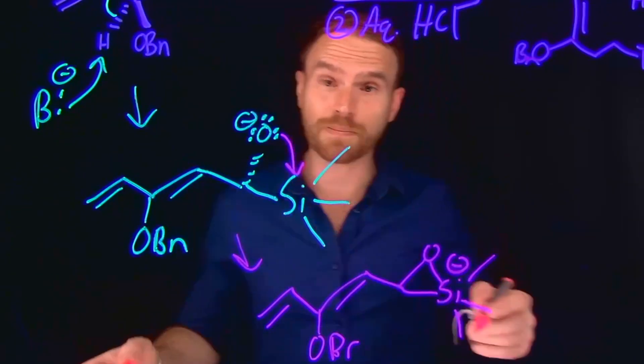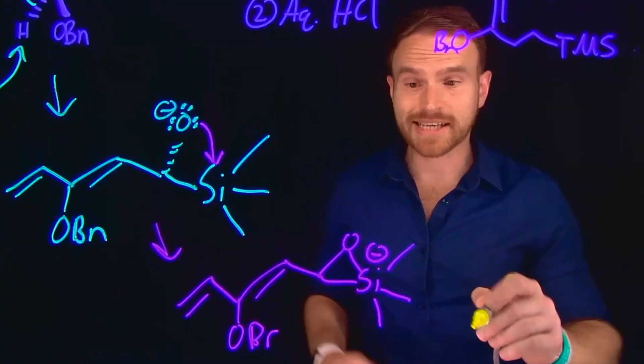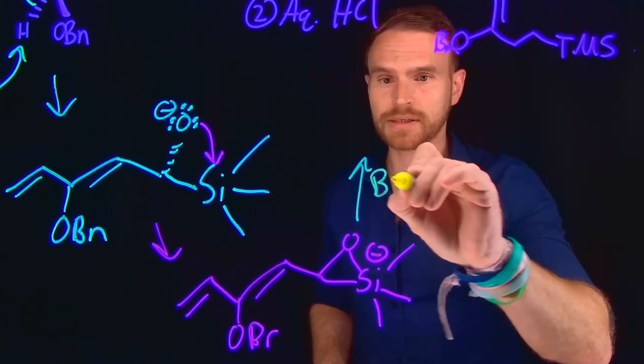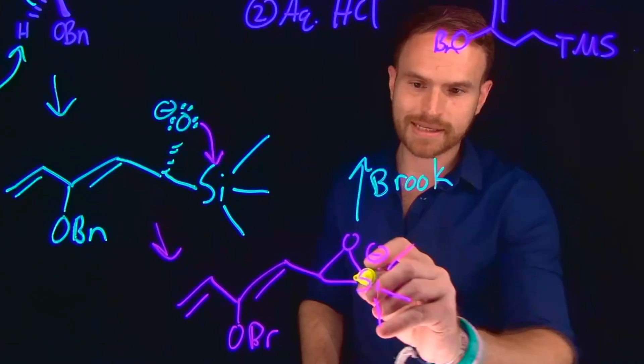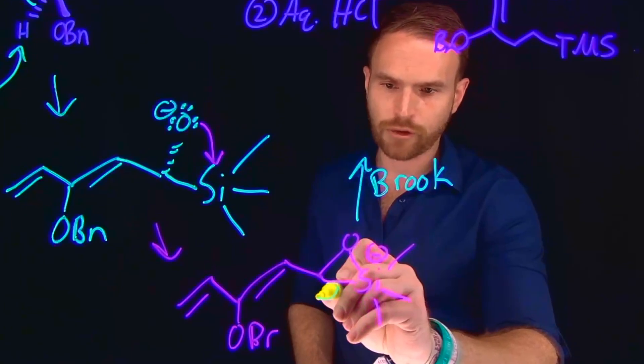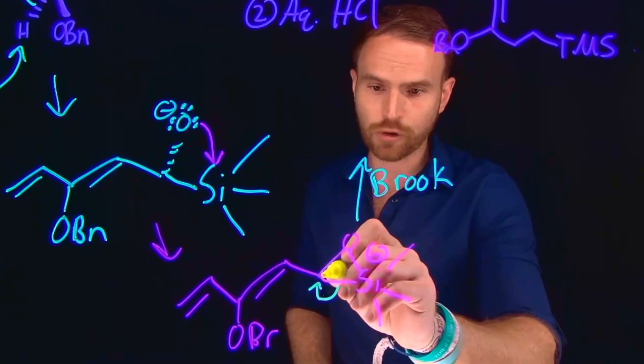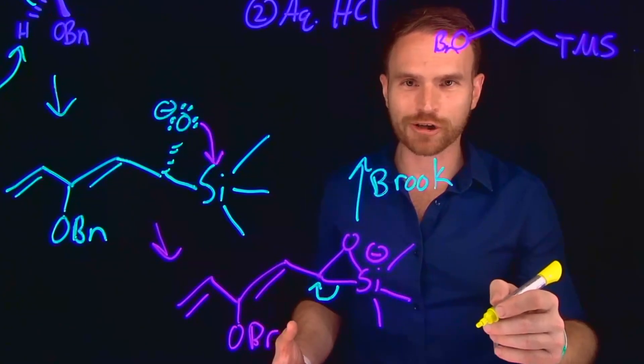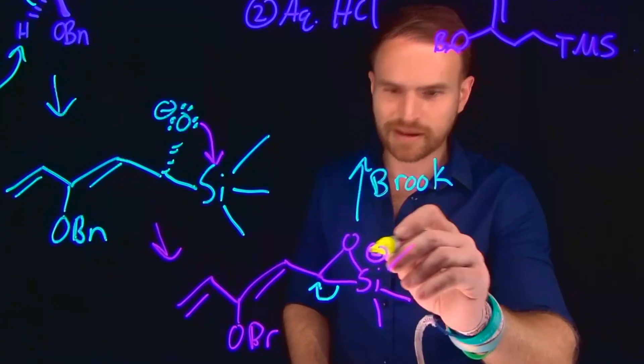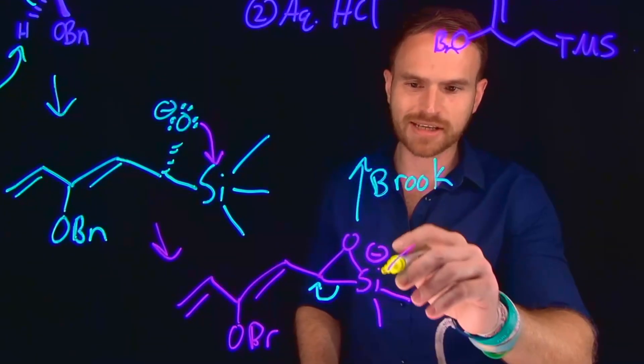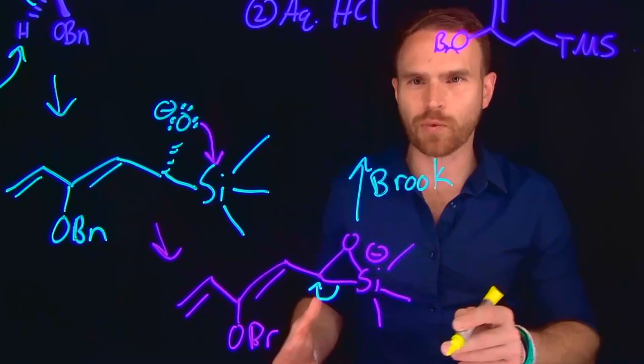So then the next step in what is known as a Brook rearrangement, so that's B-R-O-O-K, these electrons will actually come over and give us a carbon lone pair that is going to be negatively charged. And this is due to the high strain. And in fact, we're forming a negatively charged silicon. So this is going to want to give up those electrons pretty readily.